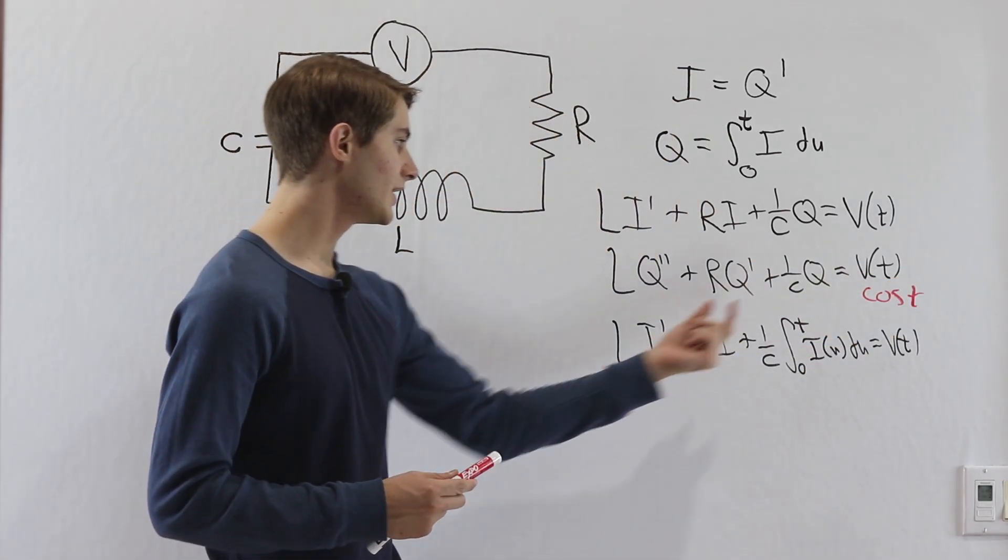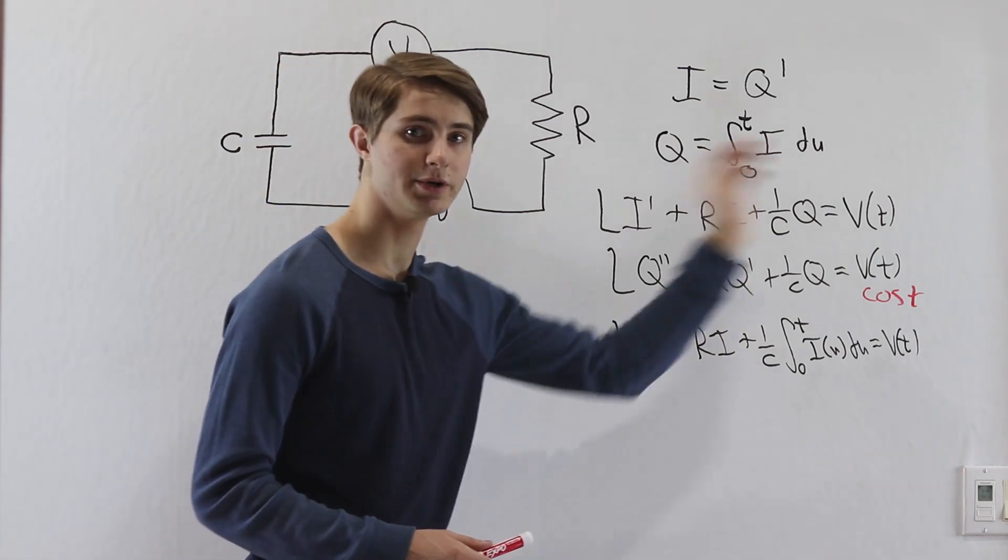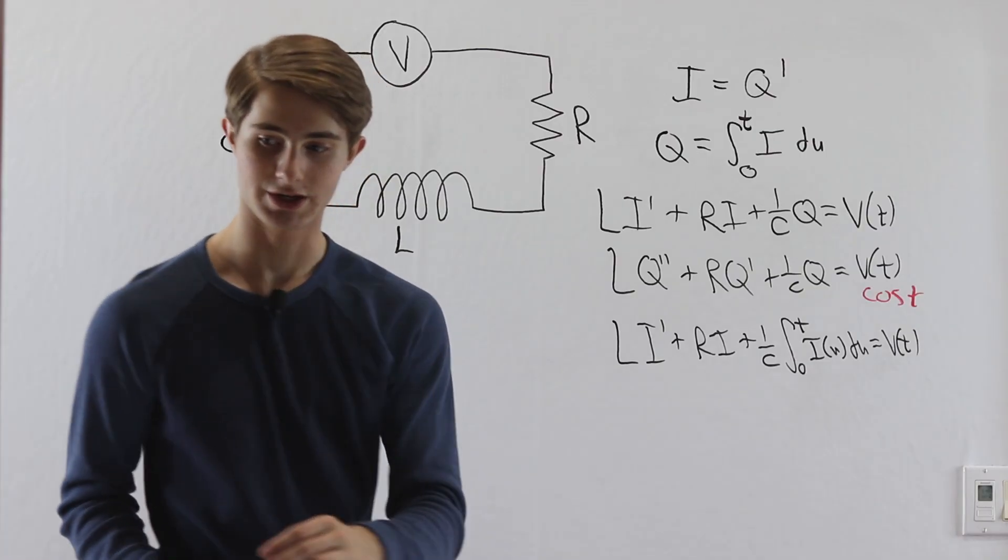Then we can say Q is going to equal A cosine T plus B sine T, and then we go through that whole process and solve for Q.